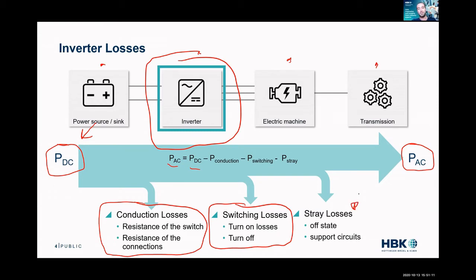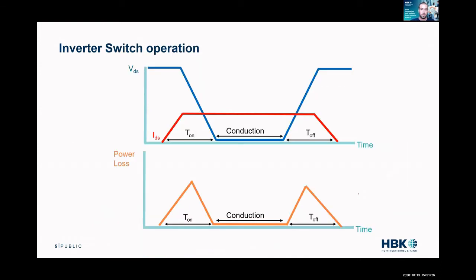Then we have stray losses, and these are kind of the catch-all for everything else — off-state losses, support circuits, and things that are generally difficult to characterize. We're not going to pay as much attention to those, but we will touch on them.